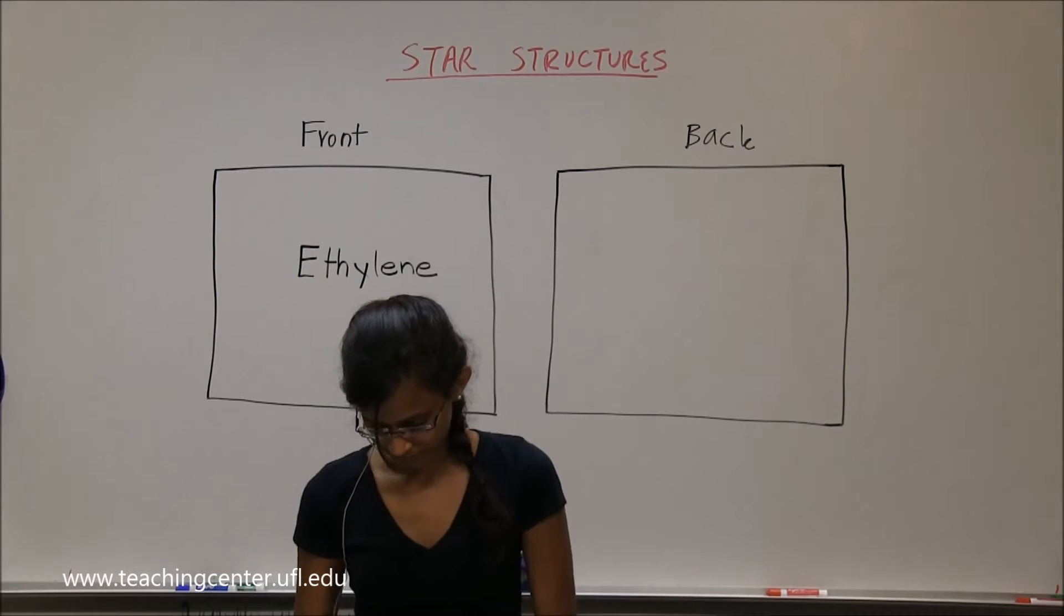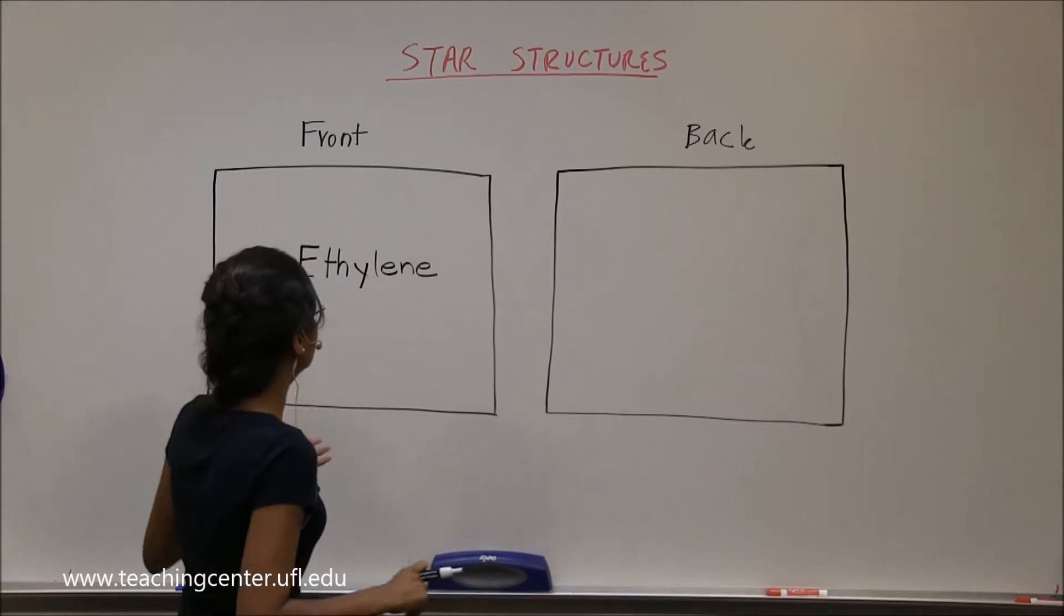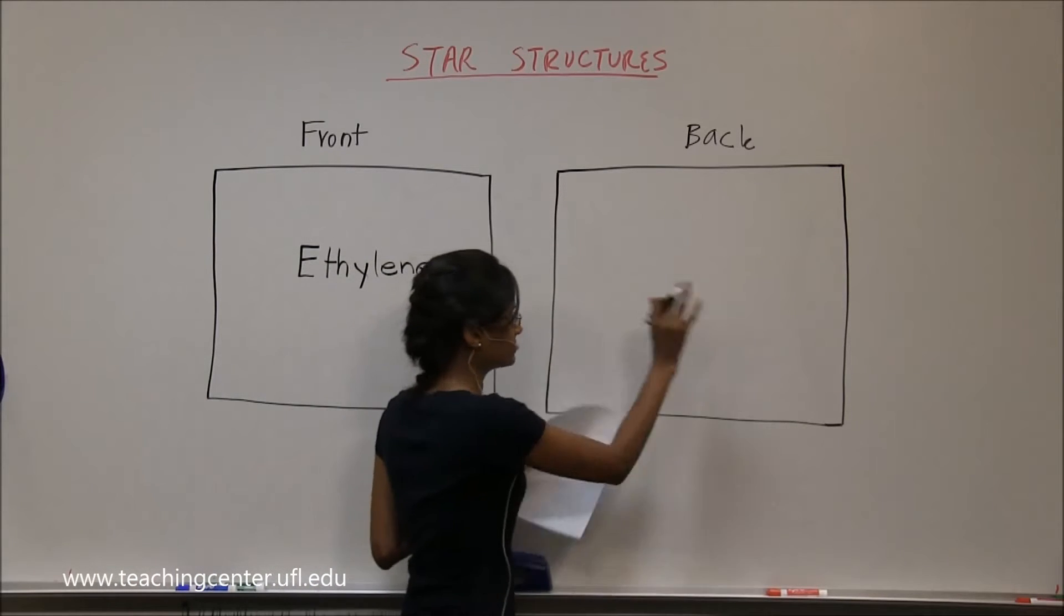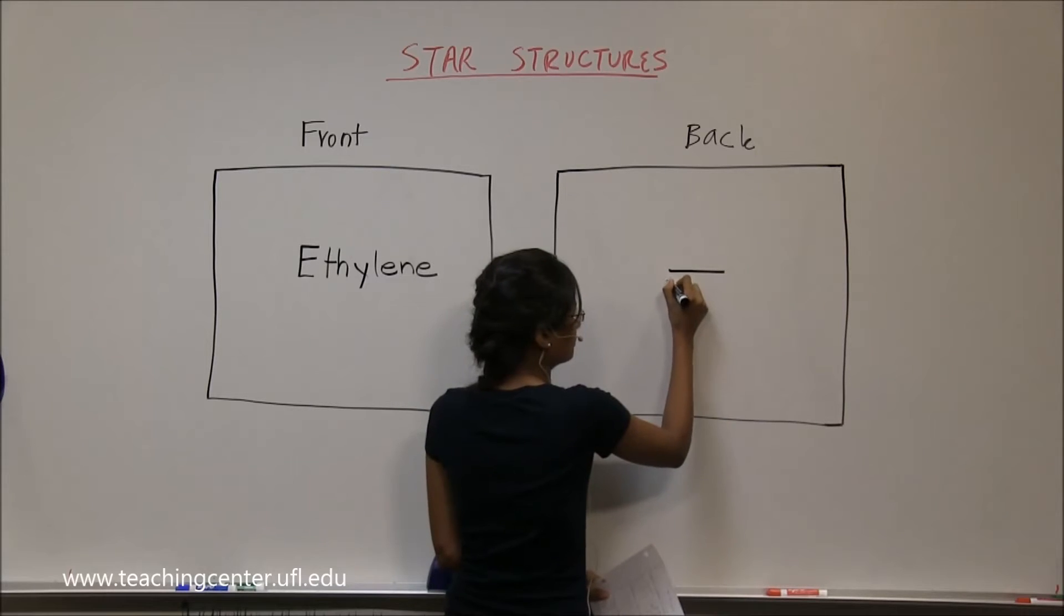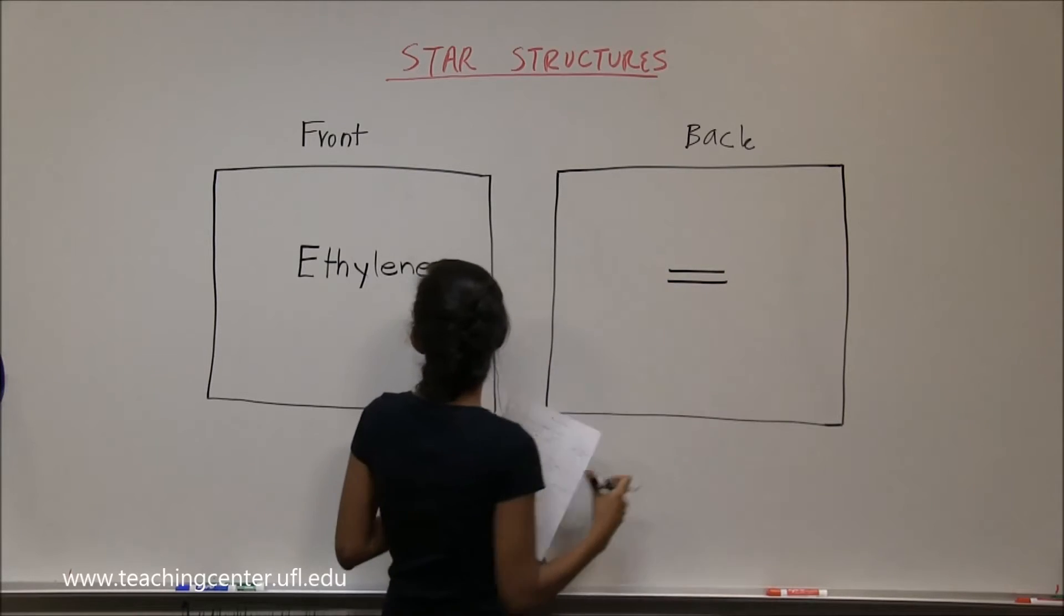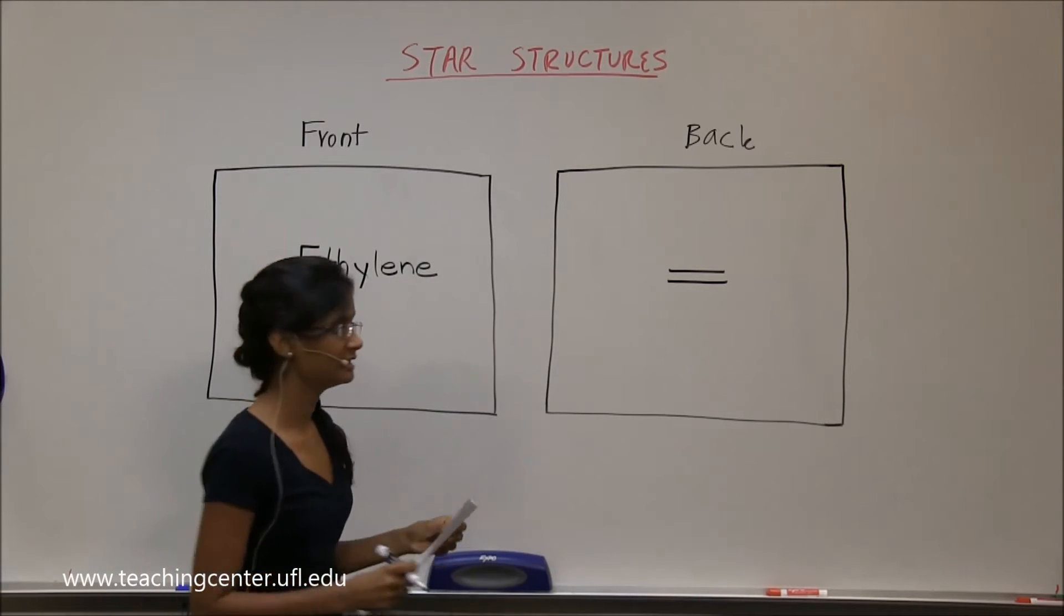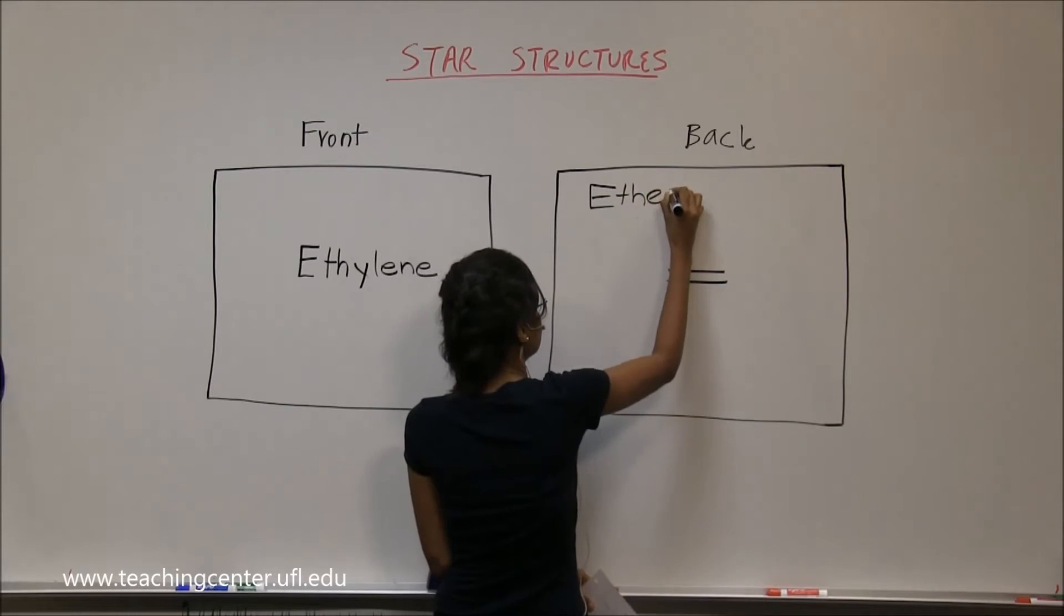All right, so let's actually draw what ethylene looks like. You know that 'eth' means two carbons, so you know the structure contains two carbons. So these are the two carbons. There is a double bond in there, so the IUPAC name is ethene.